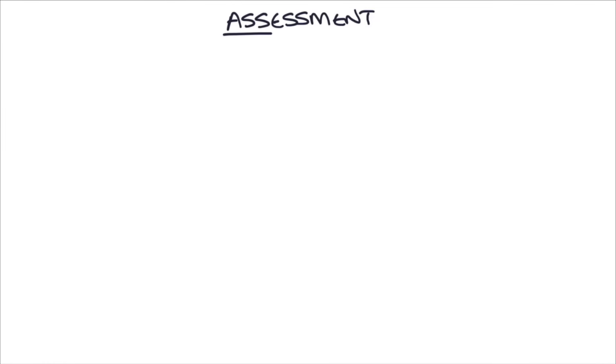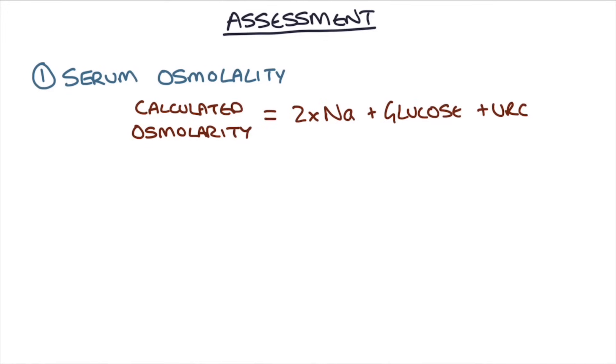So how do you assess a patient with low sodium to try and figure out what the cause is? The first thing you want to do is establish that the patient is having a genuine hyponatremia, and you can do that by checking the serum osmolality. Remember this equation because it's quite important: calculated osmolality equals two times sodium plus glucose plus urea.